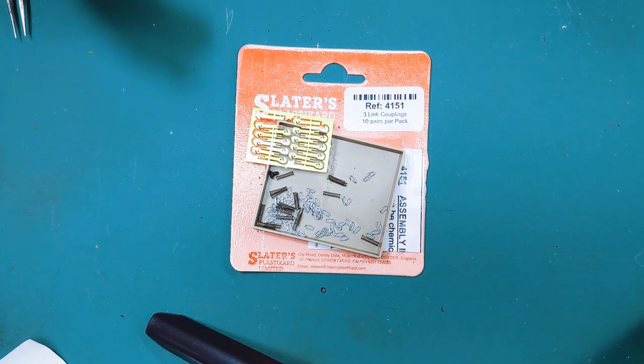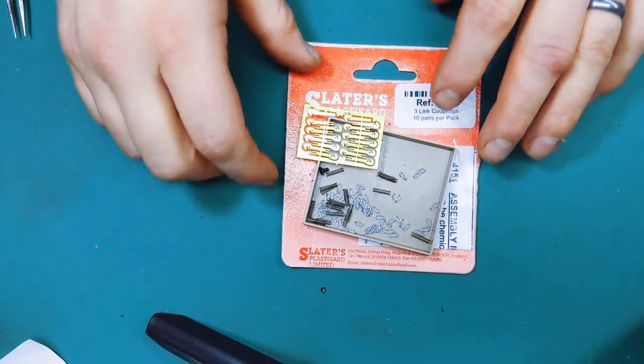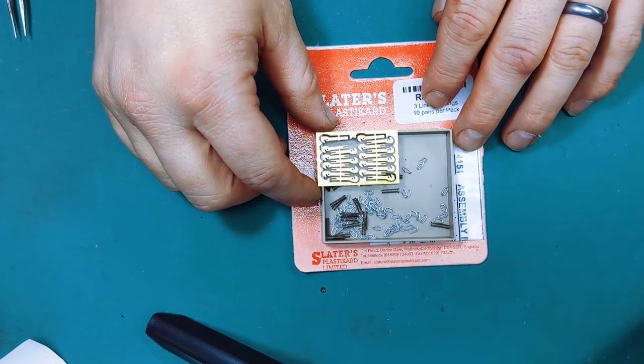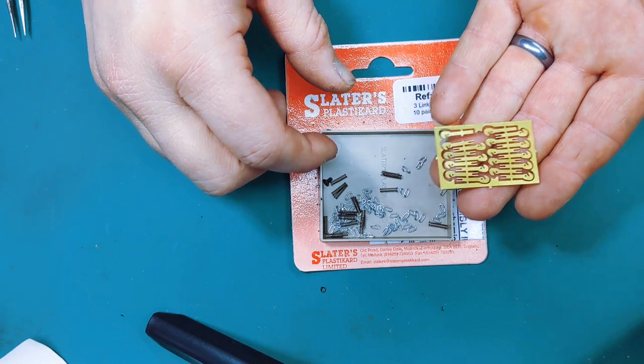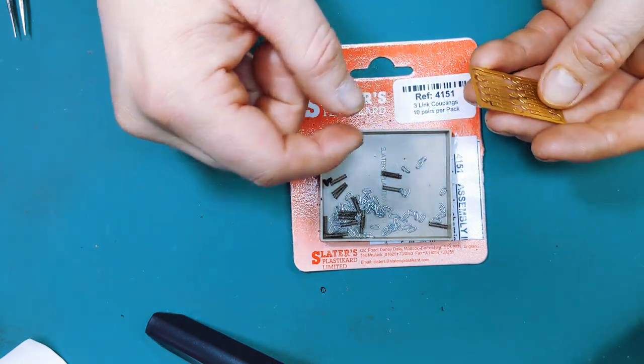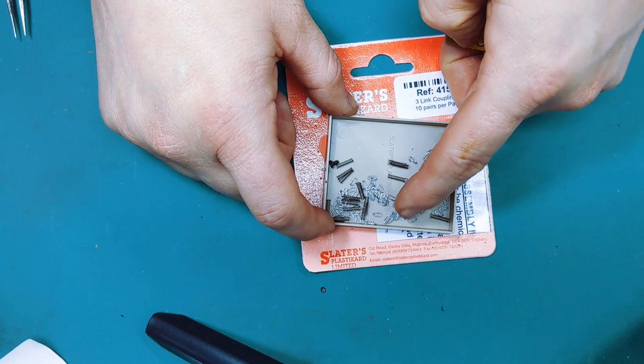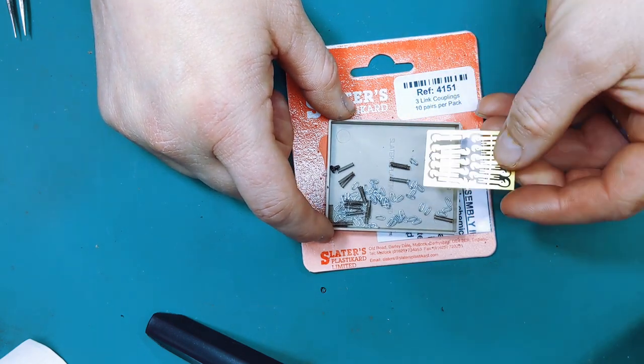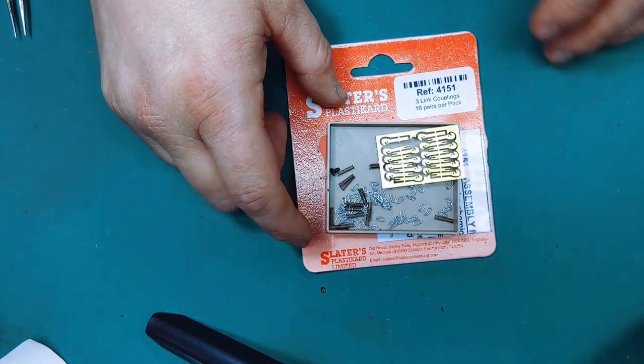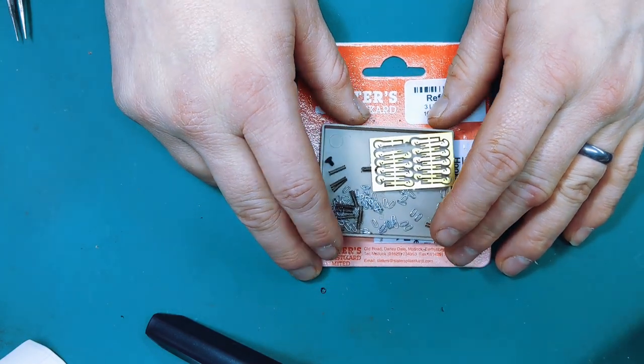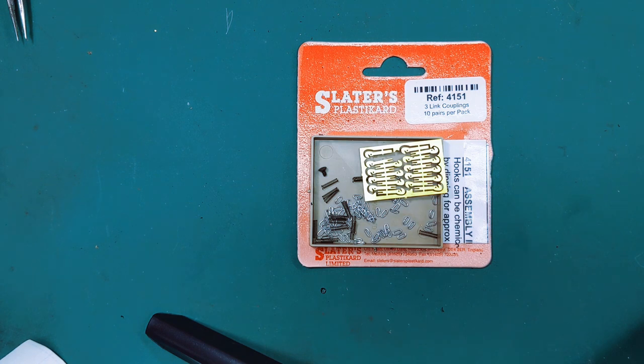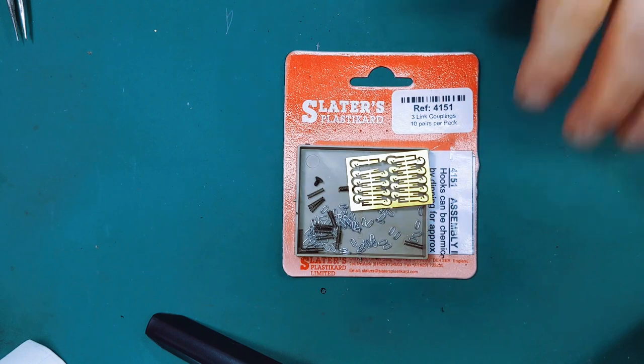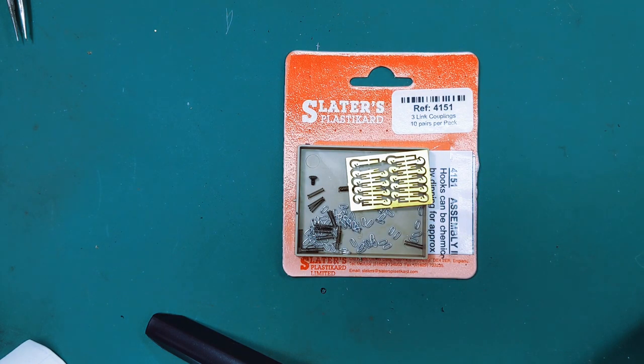This is a Slater's kit. To be fair, nothing wrong with the kit—it all works as it should do. It's a nice little brass etch with hooks, springs to make the hooks spring back in place, and your three-link individual couplings. As you can tell by how much fun these are, they're an absolute pig to fit. You need eight pairs of hands, twelve pairs of tweezers, and a large square box to do these.